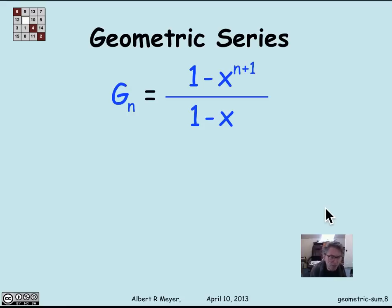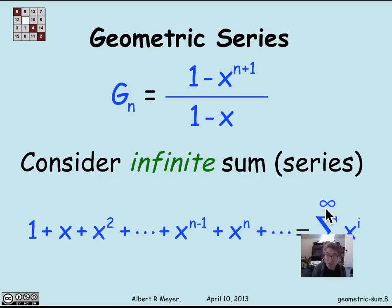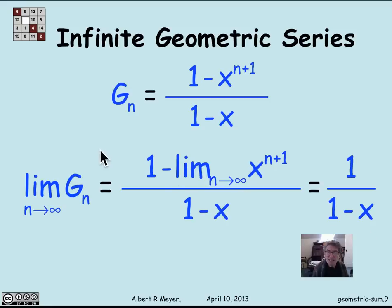A geometric series — I use the word 'sum' for a finite sum; 'geometric series' is when you take an infinite sum. The infinite geometric sum is 1 plus x plus x squared and so on: the sum from i equals 0 to infinity of x to the i. There's a simple formula for that, actually even simpler. The definition of an infinite sum is the limit of the truncated sums — the limit of the sum of the first n terms as n goes to infinity, assuming that limit exists. So the value of this infinite series is the limit of g_n.